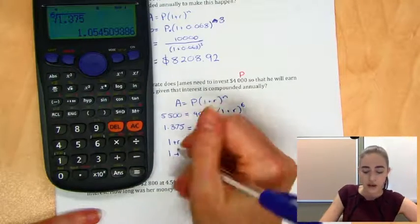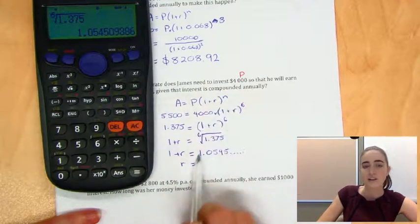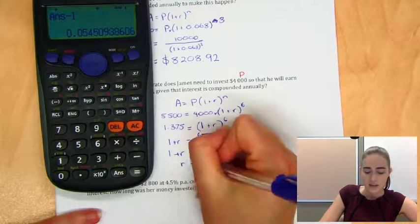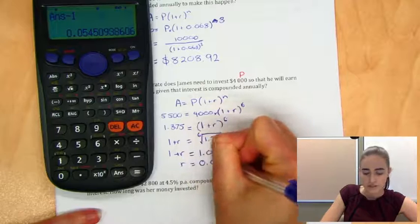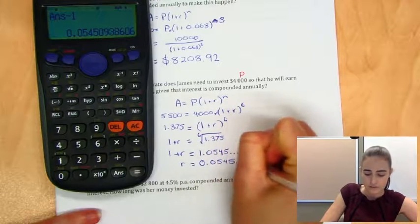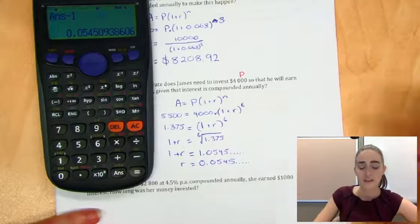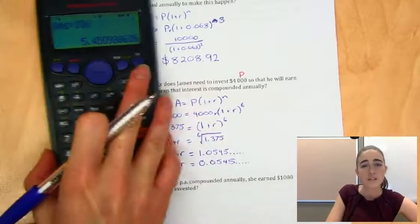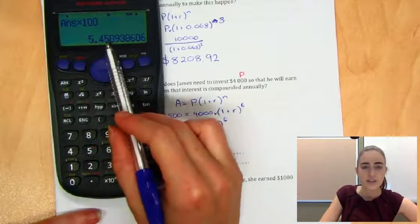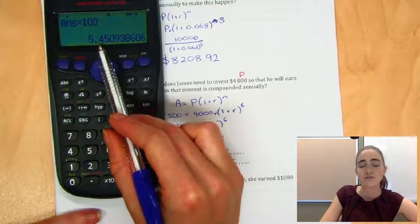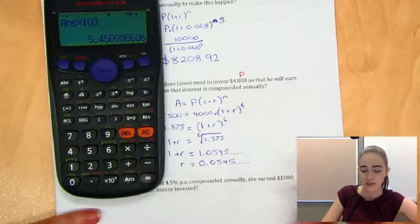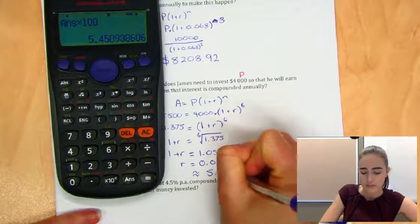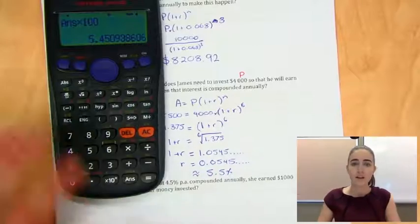So then to figure out what R is on its own, we're going to subtract 1 from that. So minus 1, and we'd end up with 0.0545, and it keeps going. So turn that into a percentage. It doesn't tell us what to round it to. Let's just round it to 1 decimal place. So because this one here is a 5, that'll change that 4. It'll round up to 5.5. So approximately equal to 5.5%. All right, one last example.